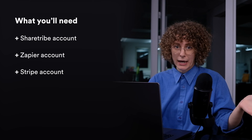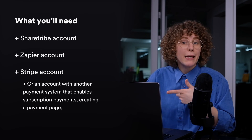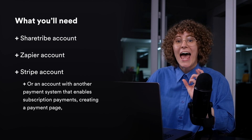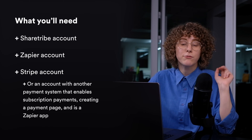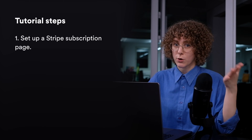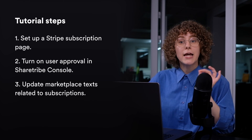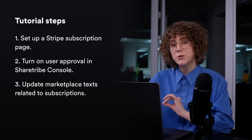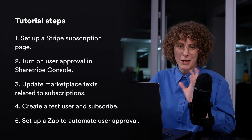For this tutorial, you'll need the following things: a ShareTribe account, a Zapier account, and a Stripe account or an account with another payment system that enables subscription payments, creating a payment page with your own content and branding, and is a Zapier app if you want to automate your subscription flow. You can find relevant links to all of these things below. The steps of this tutorial are: set up a Stripe subscription page, turn on user approval in your ShareTribe console, update marketplace text related to subscriptions, create a test user to test subscriptions, and set up a Zap to automate user approval.